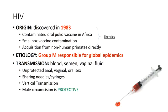HIV was discovered in about 1983. There were three theories as to its origin: contaminated oral polio virus vaccine in Africa, smallpox vaccine contamination, or acquisition from non-human primates directly. There is a simian immunodeficiency virus, SIV, which is why we think it may have originated from that virus and progressed into HIV. Remember, Group M subtype B is the most common and is the most common strain in global epidemics.